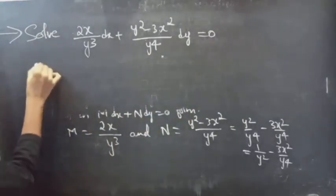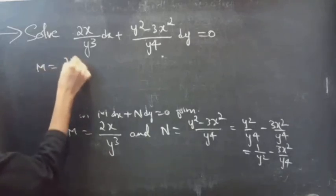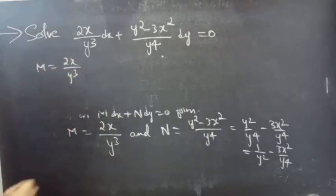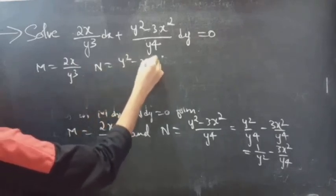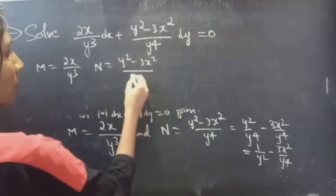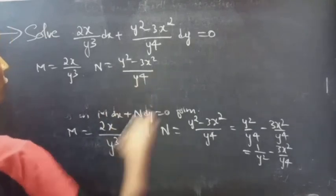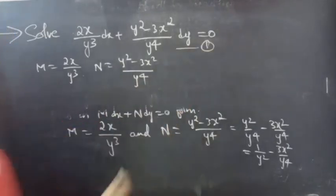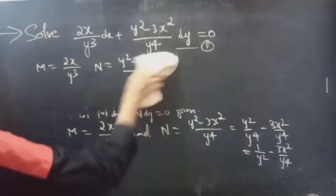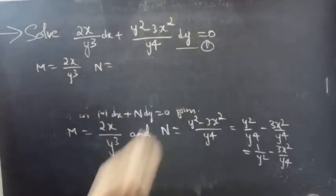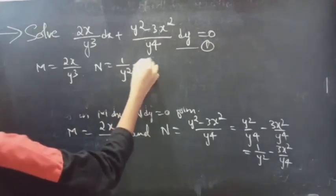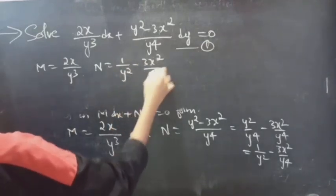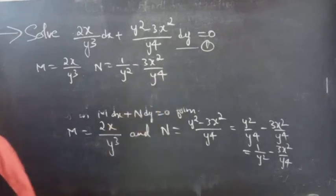We have M = 2x / y³ and N = y² − 3x² / y⁴. We have already reduced N to 1/y² − 3x² / y⁴.